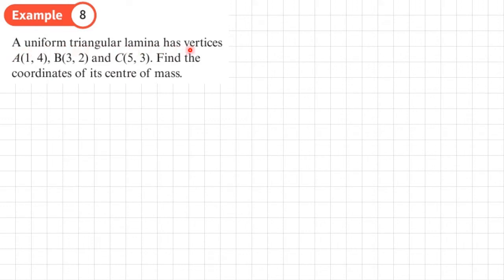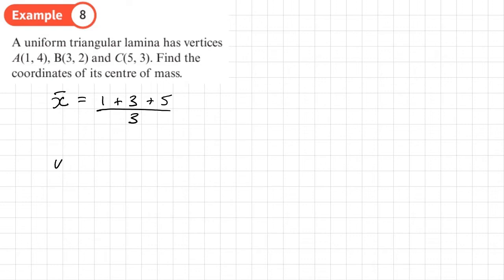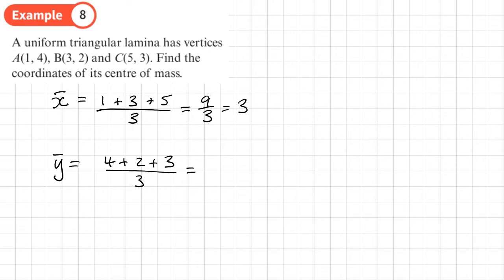Example 8: a uniform triangular lamina has vertices at (1,4), (3,2), and (5,3). Find the coordinates of its center of mass. We're finding the average of the x-coordinates and the average of the y-coordinates. x-bar = (1 + 3 + 5) / 3, and y-bar = (4 + 2 + 3) / 3. That gives x-bar = 9/3 = 3, and y-bar = 9/3 = 3. So the center of mass is at the coordinate (3, 3).